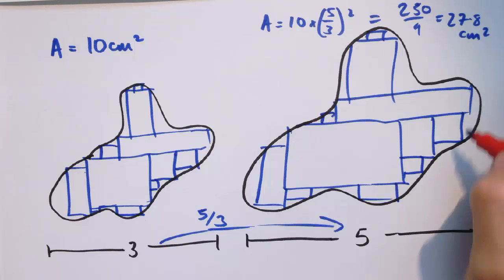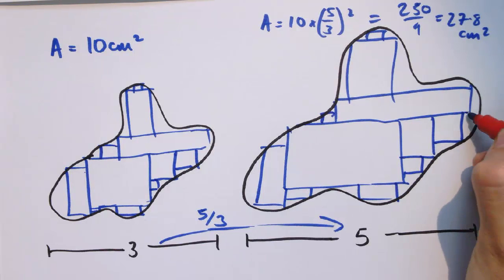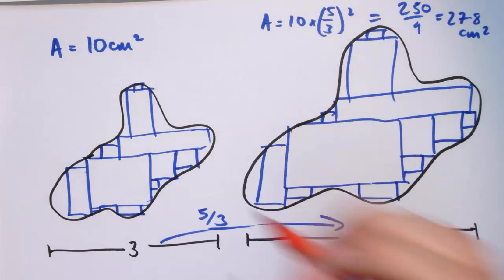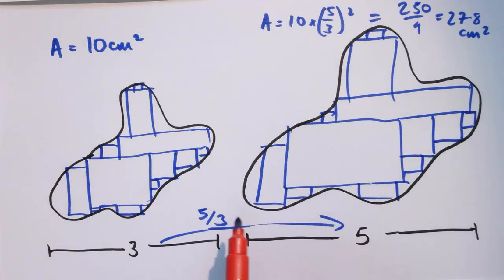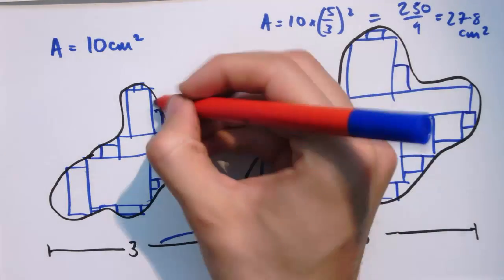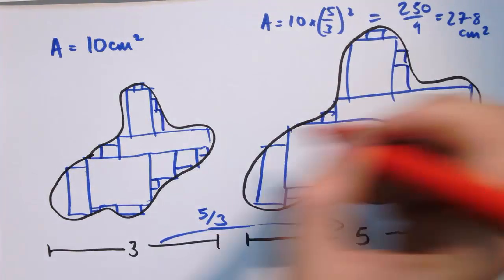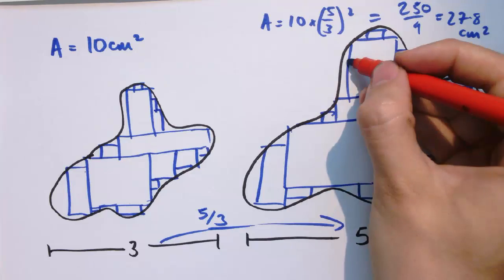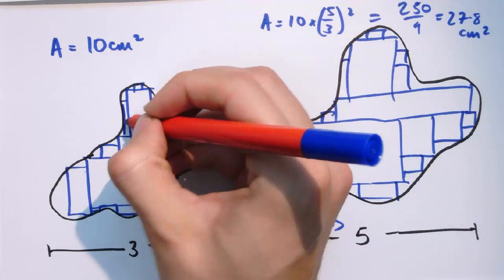But you can sort of see, because each of these rectangles scales up by an area scale factor of 5 thirds squared, then the whole shape must do so as well. You might worry a bit about the fact that I can never quite fill this whole shape in with rectangles, but it gives you the idea that the space is essentially scaling up.